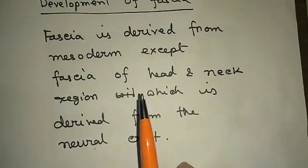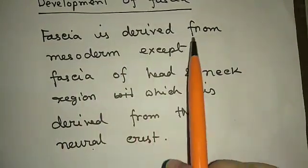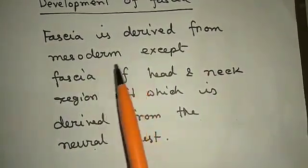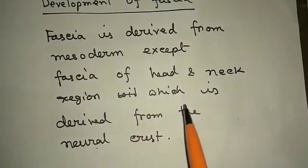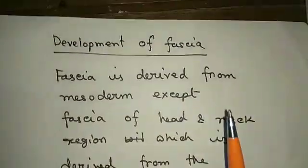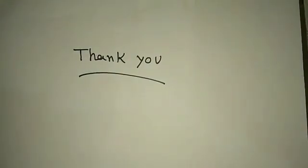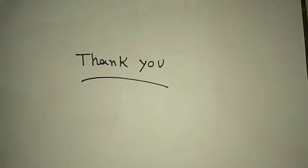Development: most fascia of the body develops from mesoderm, except fascia of the head and neck region, which is derived from neural crest. So this is all about superficial fascia. If you like this video, please press the like button and subscribe to my channel.